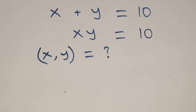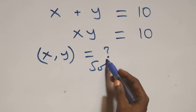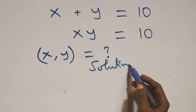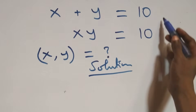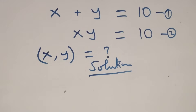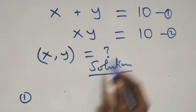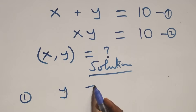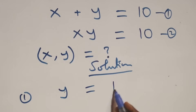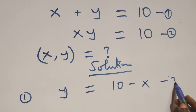Hello, welcome. Here we solve a nice exponential equation. We have two equations: we label the first as equation one and the second as equation two. From equation one, we make y the subject — taking x to the other side, this becomes y equals 10 minus x. We label this as equation three.